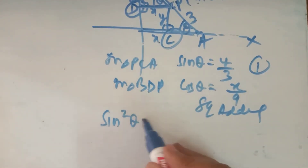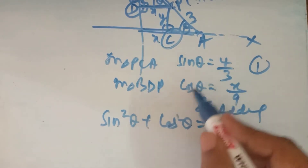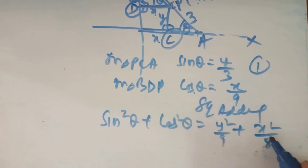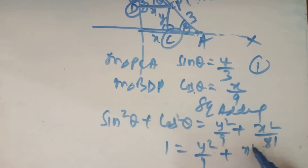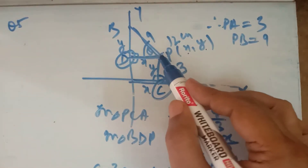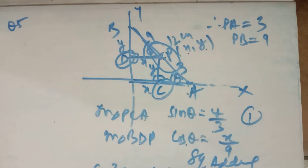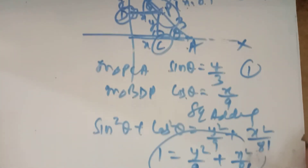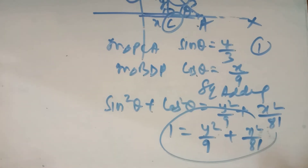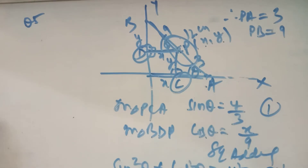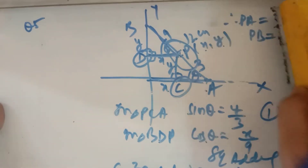Sin²θ + cos²θ = 1, so we get Y²/9 + X²/81 = 1 — आपके पास एक ellipse की equation बनेगी। When this point moves, always touching both axes, it traces an imaginary shape of the ellipse. Perpendicular draw करने थे X-axis और Y-axis पर — it is a somewhat easy question.